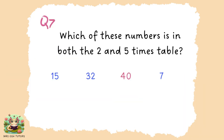Question seven: only the number 40 is in both of the times tables. First, I looked for any even numbers, because all even numbers are in the two times table. I could see that 32 and 40 are both even because they end with an even digit — two or zero. Then I know that any number in the five times table will either end with a zero or a five. So the only applicable number is 40.